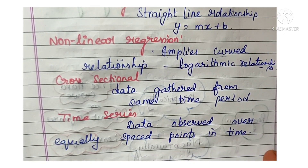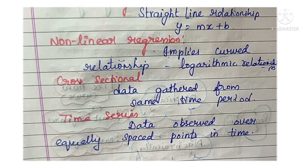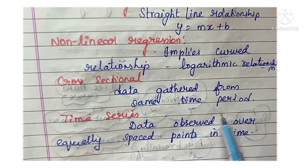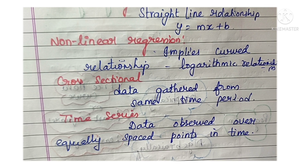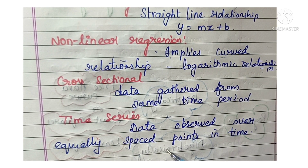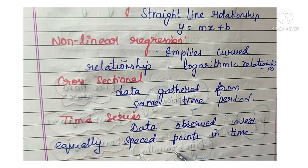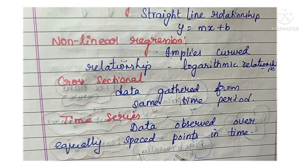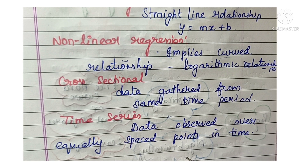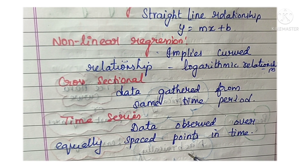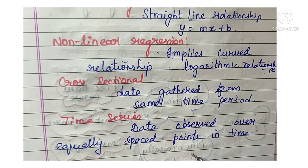Cross-sectional data is data gathered from the same period of time. Time series data is data gathered over a period of time at different points. For example, studying BSc Nursing students — you gather data in first year, then again in second year, third year, and fourth year, with each time point one year apart.